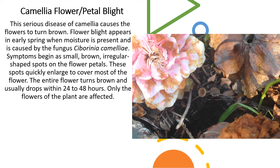Symptoms begin as small brown irregular-shaped spots on the flower petals, and these spots quickly enlarge to cover most of the flower. The entire flower turns brown and usually drops within 24 to 48 hours.